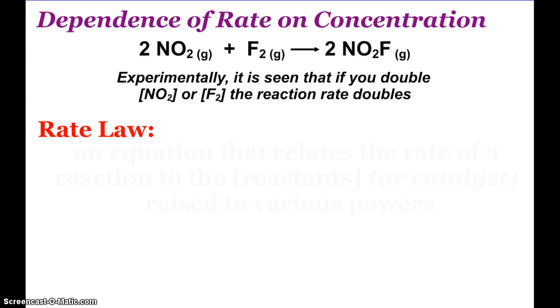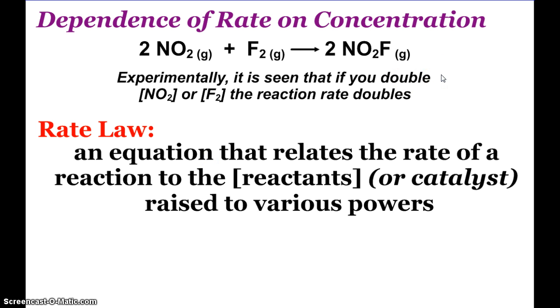Experimentally, we know that a reaction rate depends on the concentration of certain reactants as well as concentration of a catalyst if we have one. Here we have a reaction where nitrogen dioxide reacts with fluorine. Experimentally, we find that if we double the concentration of nitrogen dioxide or fluorine, the reaction rate doubles. What we can end up creating is the rate law, which is an equation that relates the rate of a reaction to the concentration of reactants or catalyst raised to various powers, and those powers are the reaction orders.